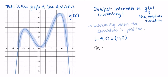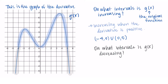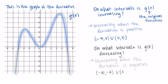The next question is on what intervals is g of x, the original function, decreasing? Remember, decreasing means the outputs of the derivative are negative, because decreasing corresponds with a negative derivative. By looking at the graph of the derivative and seeing where it is below the x-axis, we can tell that the original function is decreasing from negative infinity to negative 4 and from 5 to infinity.